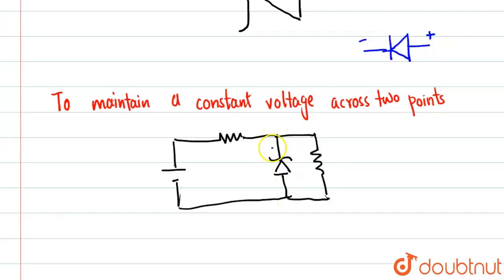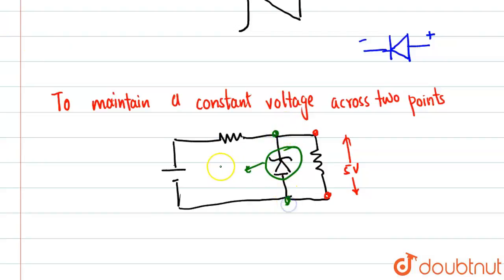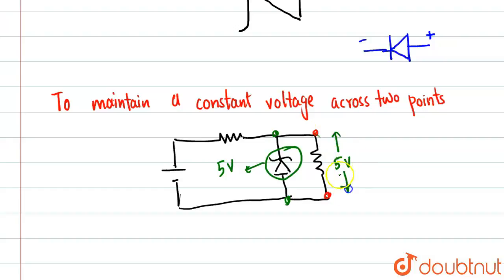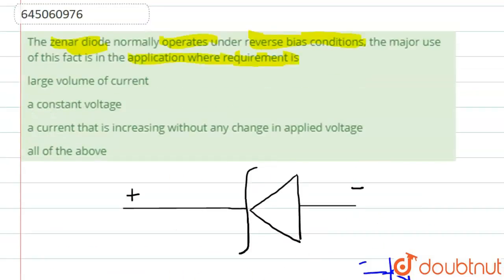Let's suppose we need a potential of five volts across this resistor — no more, no less. We put a Zener diode of such a value that the potential across it is five volts. This five volts will be equal to the voltage across that branch, which will also be five volts. This is why voltage is regulated across the resistor using the Zener diode.